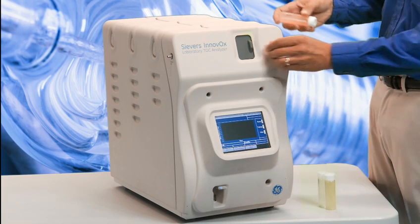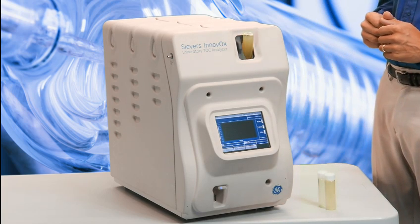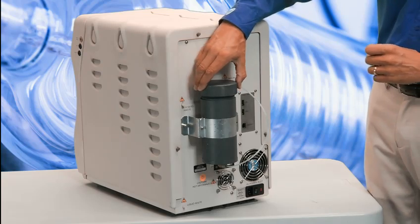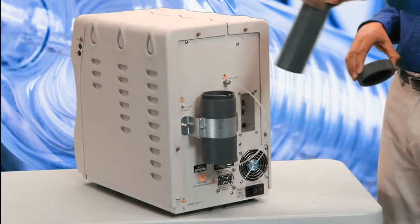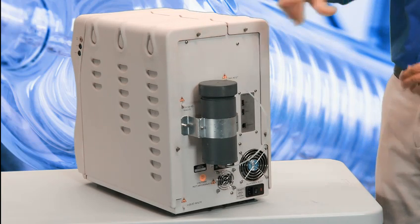First, the Innovox is simple to operate and maintain. It doesn't use any troublesome catalysts or replaceable combustion tubes, and it has a modular design for easy maintenance. It may be used with an optional onboard air filtration system, which eliminates the need for bottled gas.